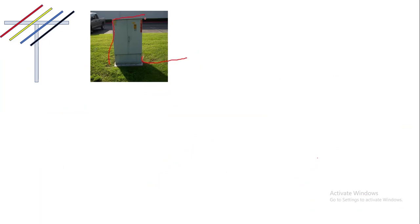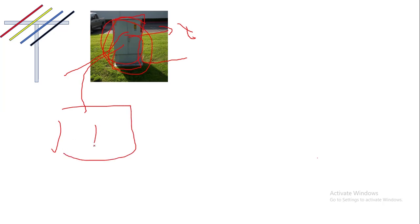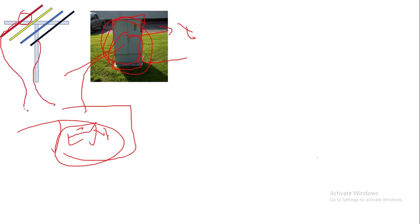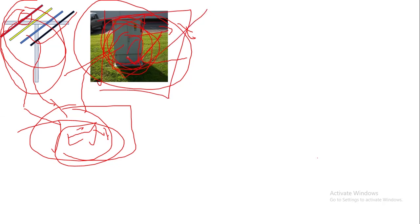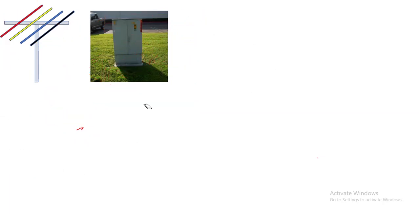This SMDB — sub main distribution board — belongs to the utility company. From here we can take single phase power supply to our home and to our energy meter. We take one phase wire and one neutral wire for single phase supply, connected to the energy meter. There are two options: if you have an overhead line system, you tap from the overhead wires; if you have an underground system, there will be an outdoor SMDB from which you can take single phase or three phase power as per your requirements. Generally for home we use single phase.